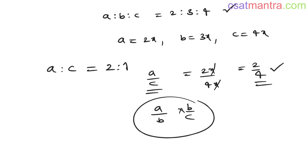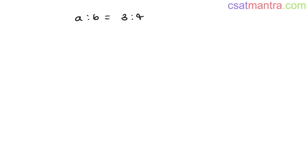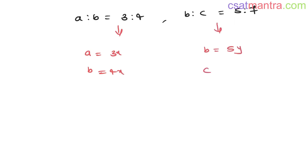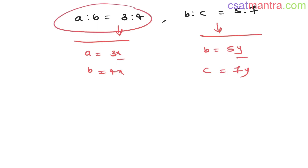Say A is to B is to C is 2 is to 3 is to 4. You can write A as 2x, B as 3x, C as 4x. So A by C is 2x by 4x, which is 2 by 4 — no need to multiply A/B × B/C; simply use the same variable. Now say you have two ratios: A is to B equals 3 is to 4, and B is to C equals 5 is to 7. From the first, A is 3x and B is 4x; from the second, B is 5y and C is 7y. Two ratios, two different variables.